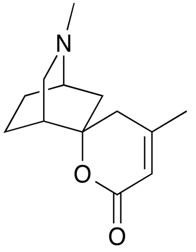Dioscorine is reported to be one of the most potent alkaloid toxins isolated from yam. It has an LD50 of 60 mg per kg in mice through an intraperitoneal route of administration. When injected into monkeys, it has a mydriatic action — that is, it causes the pupils to dilate — and resembles the pharmacological action of picrotoxin and cardiac glycosides.